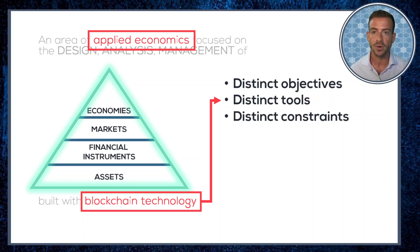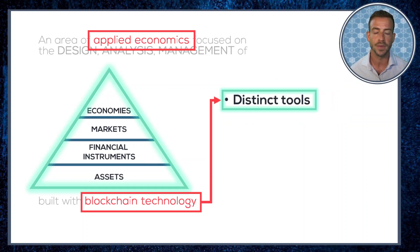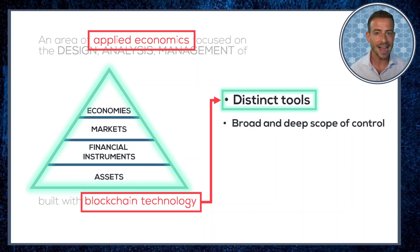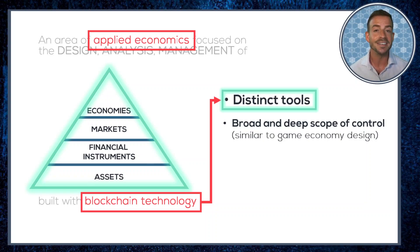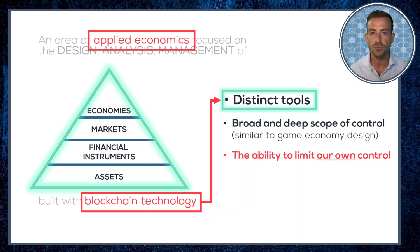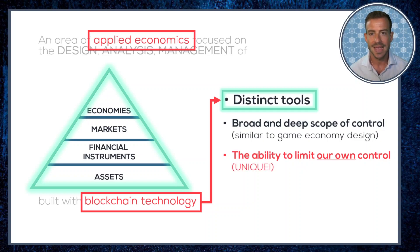Arguably, the most important differentiator lies in the nature of our toolkit. Because everything is engineered with programmable code, this gives us an almost unprecedented scope of control to design and manage our economic systems with. Video game designers have been creating economic designs with these same powers at their disposal. What makes tokenomic design special, however, is that we have one power to hand that they don't — the ability to credibly limit or remove our own centralized powers of control. This is novel and unique, and kind of amazing in a way, because you might imagine it would be contradictory to have these two powers available together.